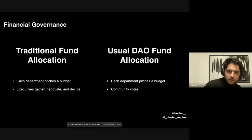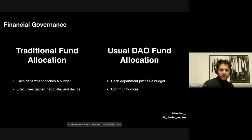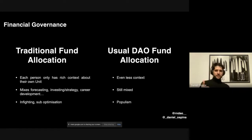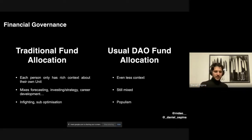Moving into financial governance, we have traditional fund allocation — the way corporations do it. Each department pitches a budget, then executives gather, negotiate, and decide, whether it's the CEO or the board making a vote. With first-generation DAOs, each unit or person pitches a budget and then the community votes on it. One consequence in traditional fund allocation is that each person only has rich context about their own unit — the marketing person has a lot of context about marketing, but when HR asks for a 10% budget increase, the marketing person doesn't really know why.